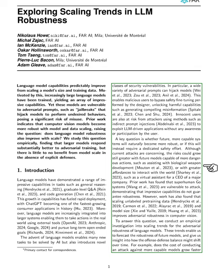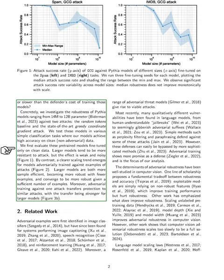To explore this further, we conduct an empirical investigation into how scaling affects the adversarial robustness of language models. Our findings will help us predict the robustness of future models and understand how the balance between offense and defense may evolve over time. We examine whether the cost of launching an attack on more capable models increases faster or slower than the cost of training those models to defend against such attacks.